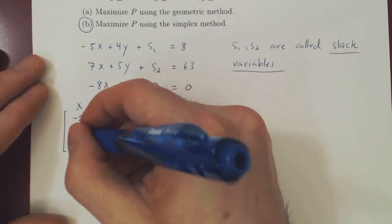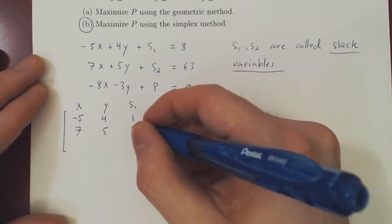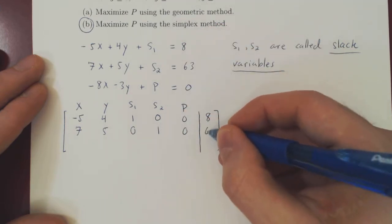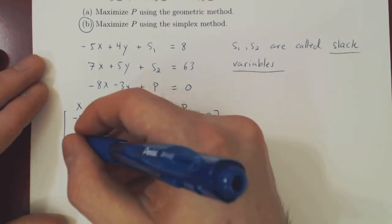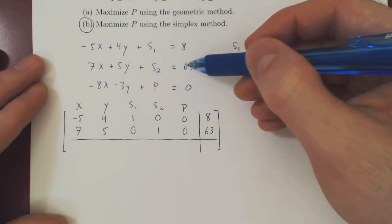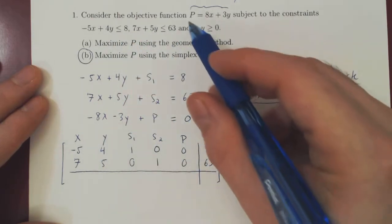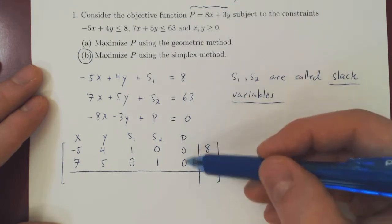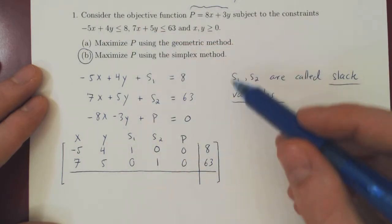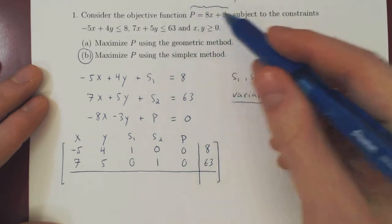Second equation: 7x, plus 5y, there is no s1 so 0 coefficient, plus 1s2, there is no p plus 0p, equals 63. And we now use a horizontal bar to separate the equalities coming from the original inequalities and the last equality coming from the objective function. So always remember, what goes on top of your simplex matrix are the equalities constructed from the inequalities by adding the slack variables. The bottom row will always be obtained by transforming the objective function.